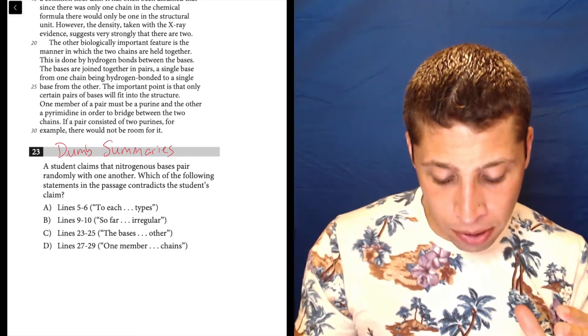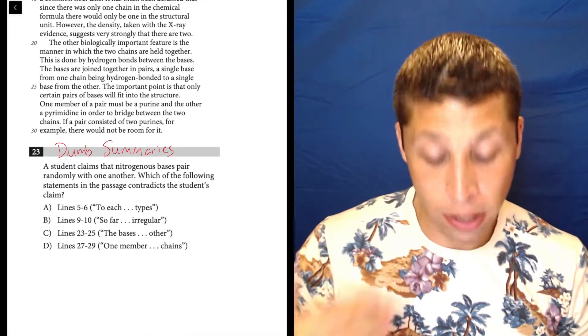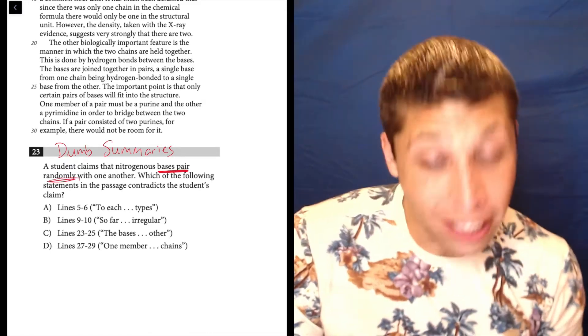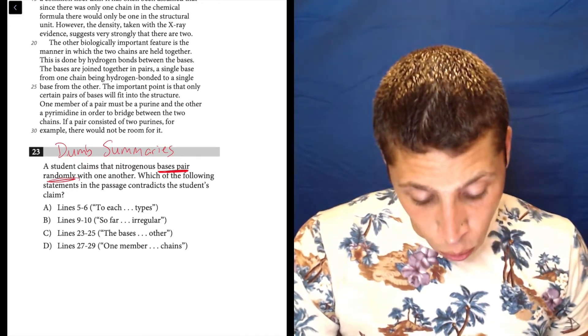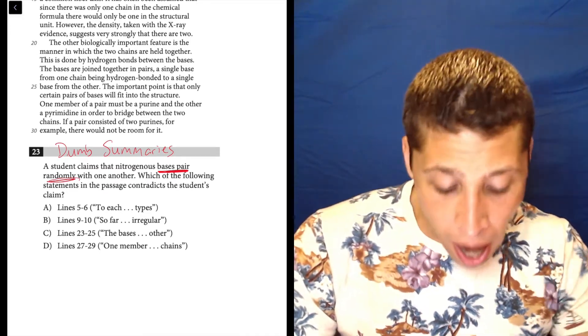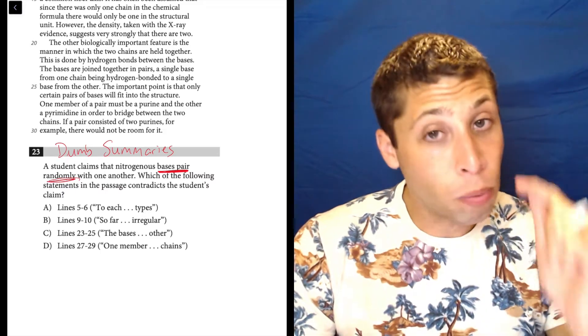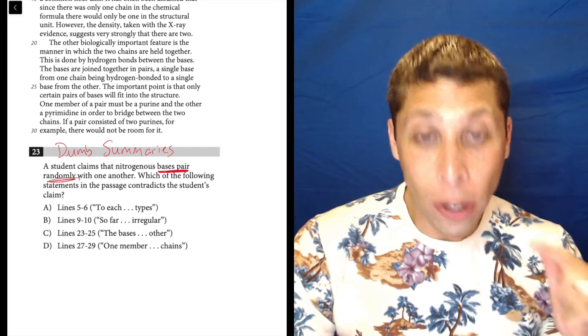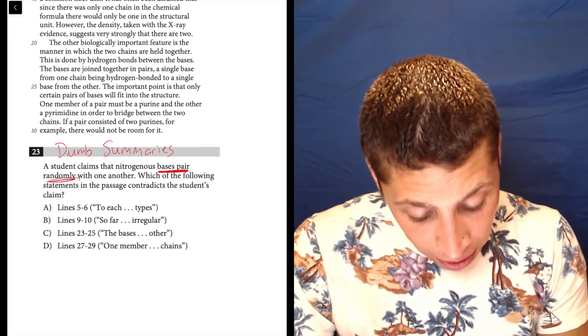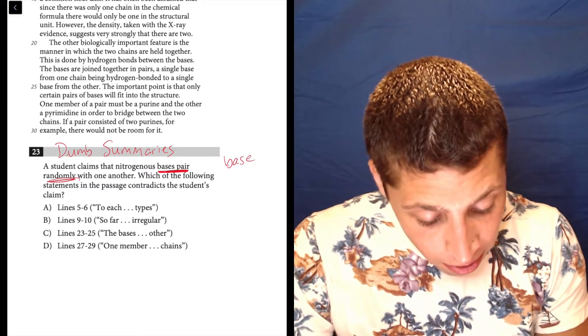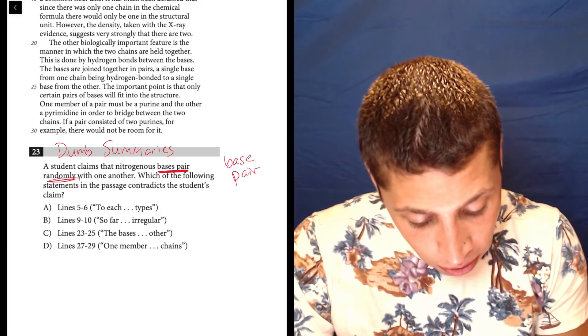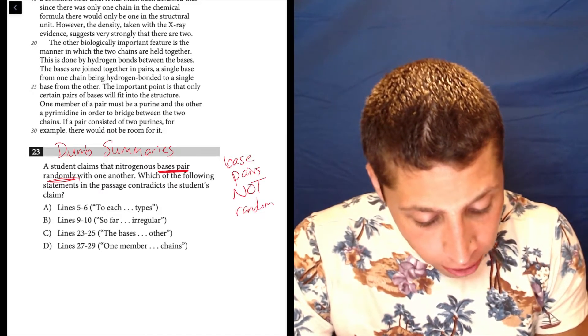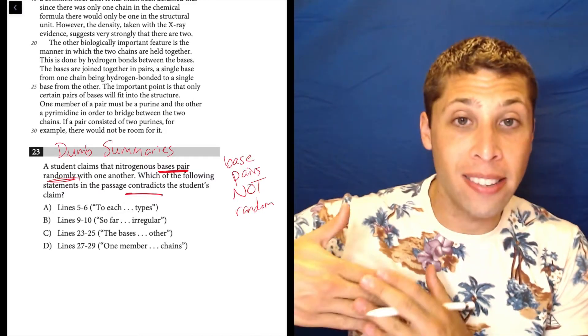So what are they saying? A student claims that nitrogenous bases pair randomly with each other, with one another. So bases pair randomly, literally that's all I care about. Which of the following statements in the passage contradicts the student's claim?